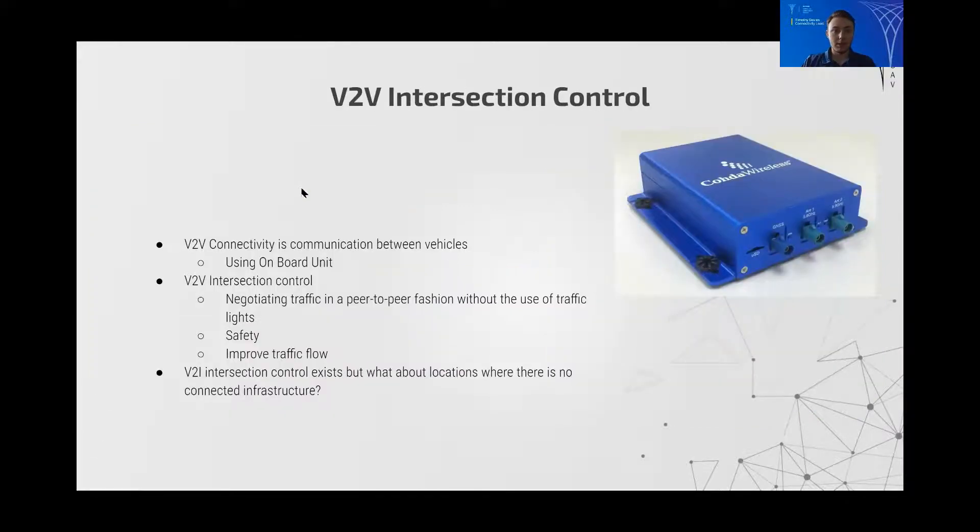So the Intersection Control Algorithm. Firstly, V2V Connectivity is what we're using to facilitate Intersection Control. V2V Connectivity is communication between vehicles using the onboard unit which looks just like this over here. V2V Intersection Control is negotiating traffic in a peer-to-peer fashion without the use of traffic lights. We focus on safety and improving traffic flow.